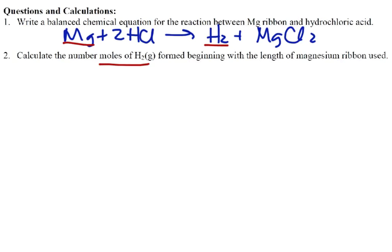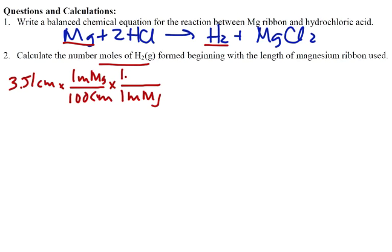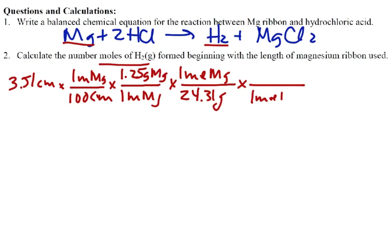Second part, calculate the moles of hydrogen if we begin with our length of ribbon. So we are going to do this, we have 3.51 centimeters of magnesium, and we know that there's 100 centimeters in 1 meter of magnesium. Because we weighed this, we know that 1 meter of magnesium is 1.25 grams of magnesium. And we know that there's 24.31 grams in 1 mole of magnesium. And that's from the periodic table. And then from our balanced equation above, we know that 1 mole of magnesium gives us 1 mole of hydrogen gas.